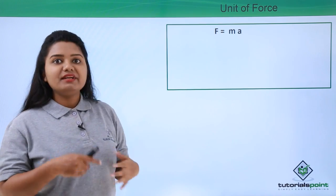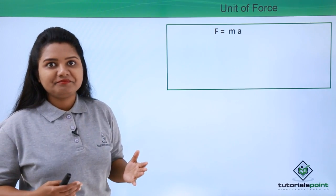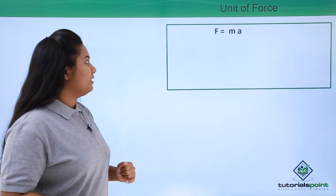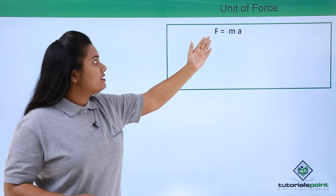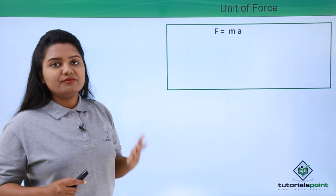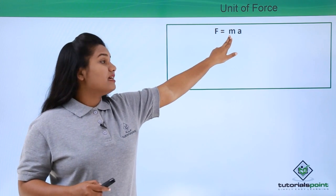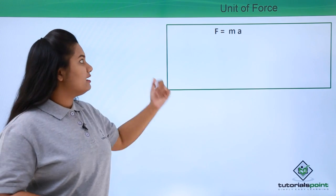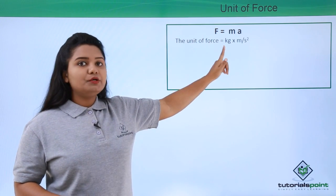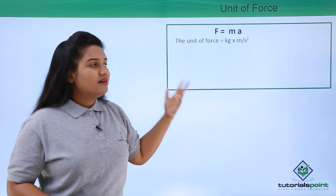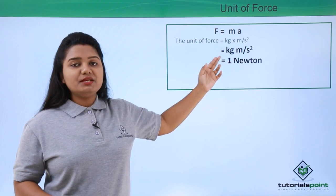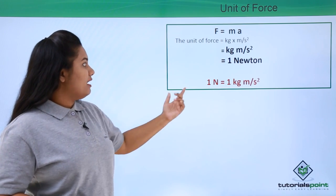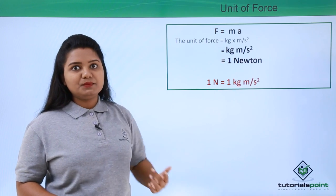F = ma is the expression from which we can calculate the force acting on a body, just by knowing its mass and acceleration. The SI unit of force is kg·m/s², which equals 1 newton. So 1 newton = 1 kg·m/s².